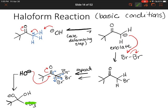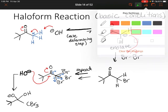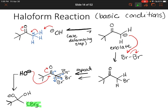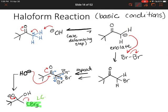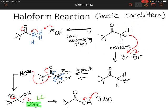CBr3 can actually act as a leaving group. If our negative oxygen recreates its double bond, that's going to kick out CBr3 — and look at what we've formed: a carboxylic acid. CBr3 is going to have a negative charge, so it will take the proton on our carboxylic acid. What we have to do is react this with HCl, and that will give us our final protonated carboxylic acid.